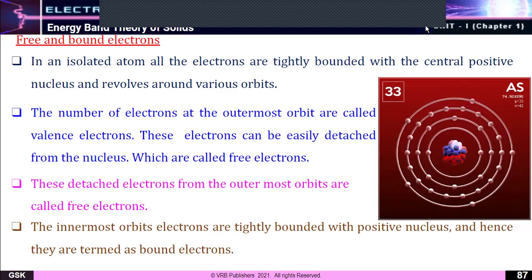Here we have an atom with atomic number 33. When we split this into KLMN orbitals: K contains 2, L contains 8, M contains 18, and the remaining 5 are in the N orbital. In this isolated atom, all electrons are tightly bound to the central positive nucleus and revolve around various orbits such as KLMN orbitals.